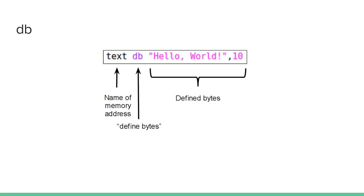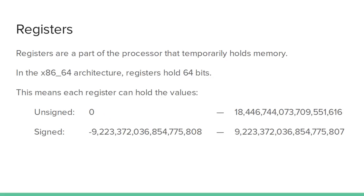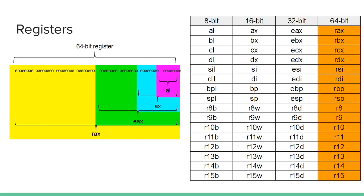So we have the name of the memory address, Define Bytes, and then the defined bytes. Now we're going to look at registers. Registers are part of the processor that temporarily hold memory. In the x86-64 architecture, registers hold 64 bits. This means our registers can have values between 0 and 18 quintillion, or negative 9 to 9 quintillion if it's signed. Those are the number ranges that the registers can hold. Registers all hold integer values, so they're whole numbers. Here's an example of what a register would look like.